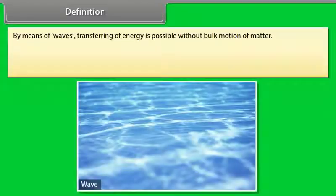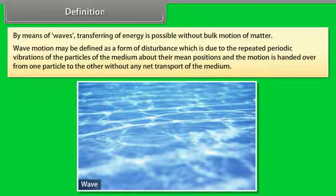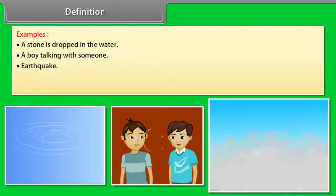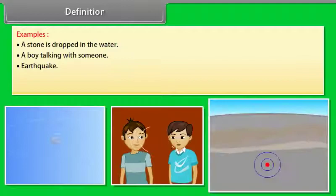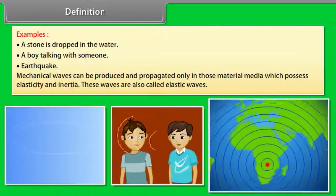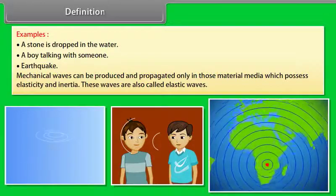Definition: By means of waves, transferring of energy is possible without bulk motion of matter. Wave motion may be defined as a form of disturbance which is due to the repeated periodic vibrations of the particles of the medium about their mean positions, and the motion is handed over from one particle to the other without any net transport of the medium. A stone dropped in water, a boy talking with someone, and earthquakes are some examples of wave motion. In this chapter, we shall study about mechanical wave motion. Mechanical waves can be produced and propagated only in those material media which possess elasticity and inertia. These waves are also called elastic waves.